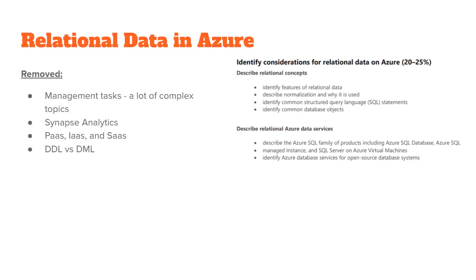The second section is relational data. What they've done is removed a lot of the complex topics. Everything under management tasks for relational databases has been removed. They've also removed any reference to Synapse Analytics, DDL versus DML, the management query types, PaaS, IaaS, and SaaS differences. What they're doing is focusing on what is relational data, why is it used, what is SQL and how is it commonly used, and the Azure data services related to SQL Server. And then the open source database systems, which are PostgreSQL, MySQL, and MariaDB. So there has been removal of the complex topics and refocusing on the core concepts of relational data.